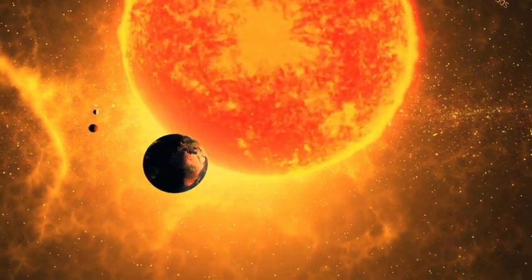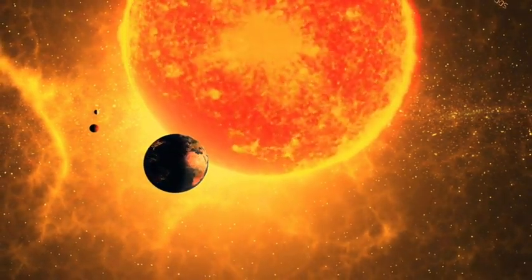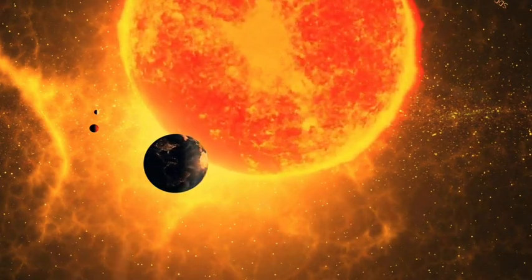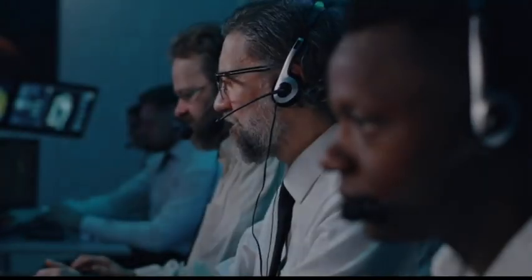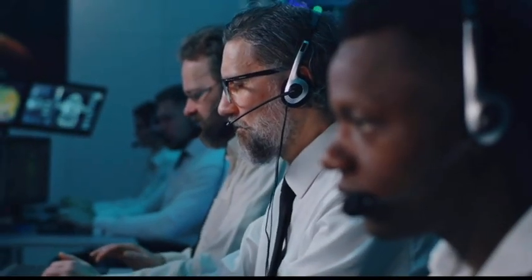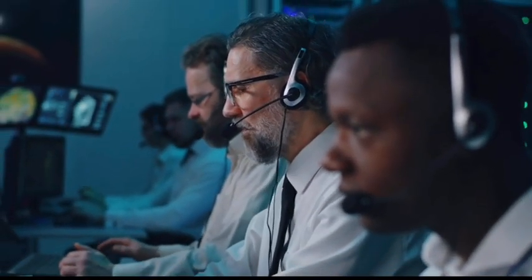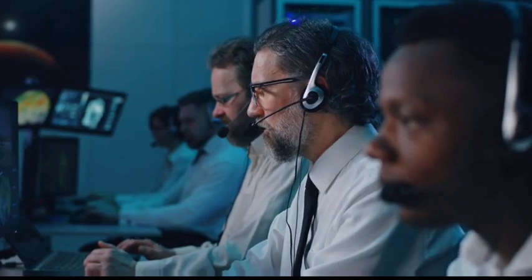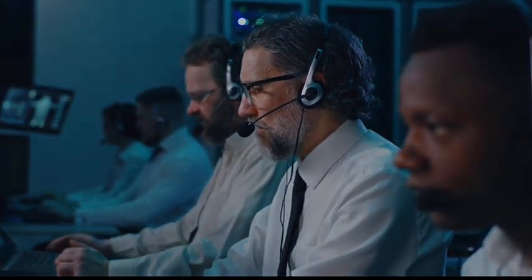A counter-Earth would indeed have a gravitational effect on its surroundings, including Earth, other planets, and satellites. Researchers would detect this influence on the orbits of nearby celestial bodies. For instance, gravitational tugs on planets like Mercury or Venus would be noticeable due to the gravitational effects of each object within the solar system.